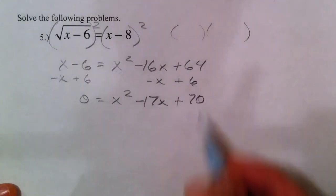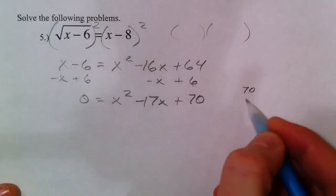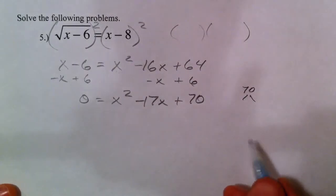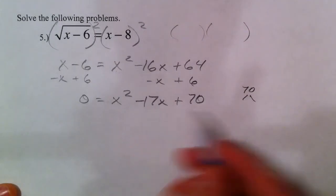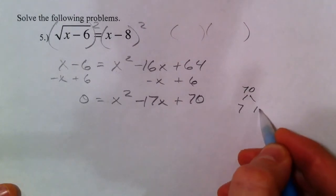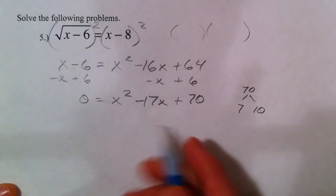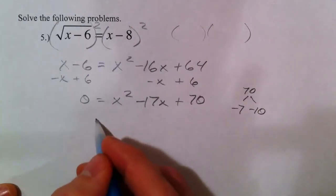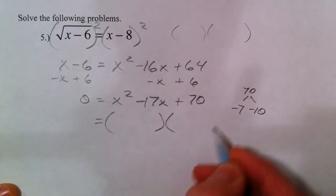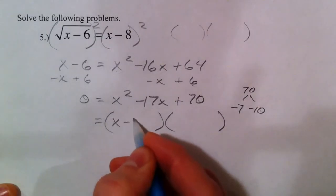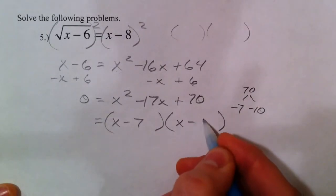I always look to see what multiplies to 70 and adds to 17. Quickest one to see. 7 and 10. Now it's got to add to a negative 17, so it's going to make a negative 7, negative 10. And so let's go right to it. x minus 7, x minus 10.